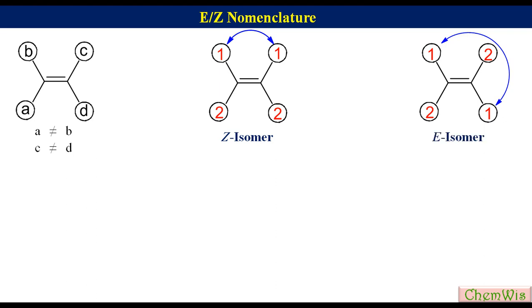Z is the first letter of the German word Zusammen, which means together, and E is the first letter of the German word Entgegen, meaning opposite.